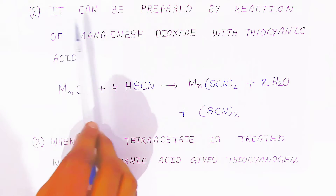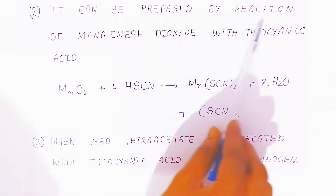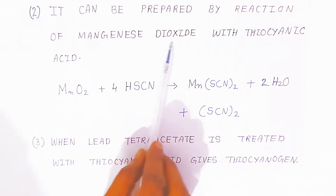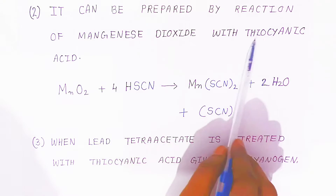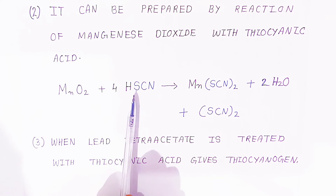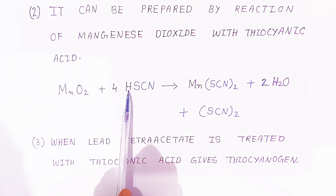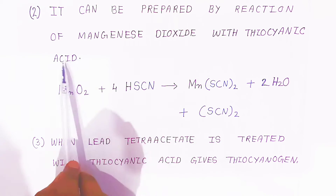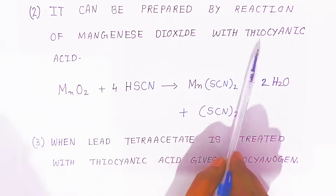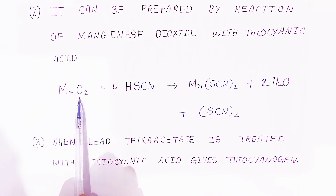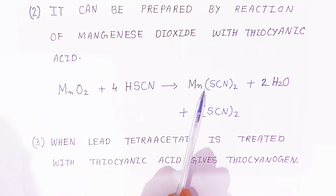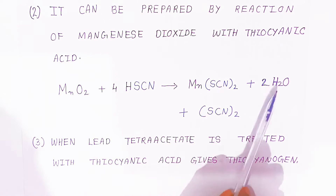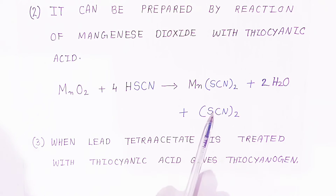Second preparation: it can be prepared by the reaction of manganese dioxide with thiocyanic acid. Because of the H, we call it an acid. When manganese dioxide reacts with thiocyanic acid, you get manganese thiocyanide, water, and thiocyanogen.